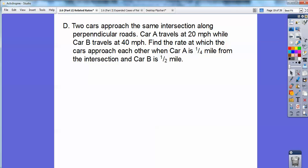Car A travels at 20 miles per hour while car B travels at 40 miles per hour. Find the rate at which the cars approach each other. When car A is one quarter of a mile from the intersection and car B is one half of a mile.